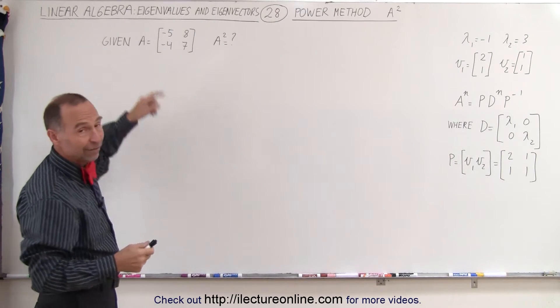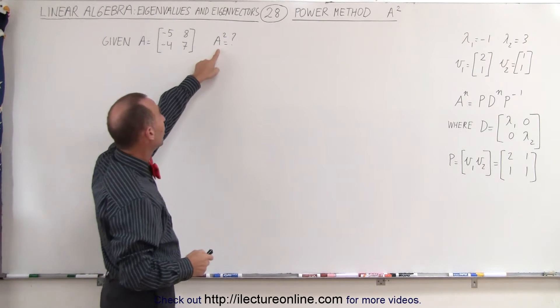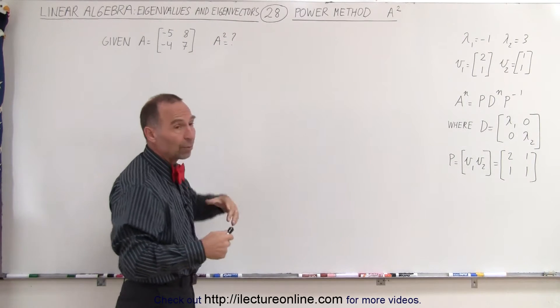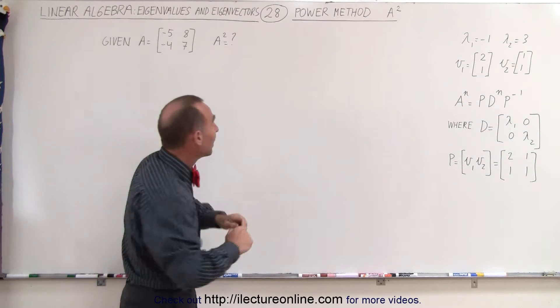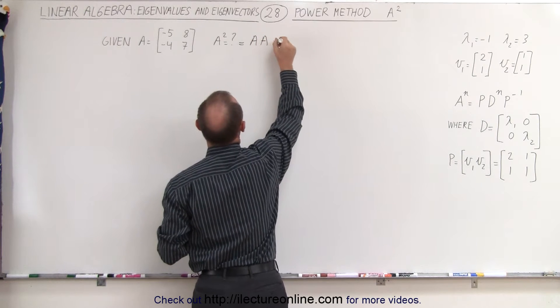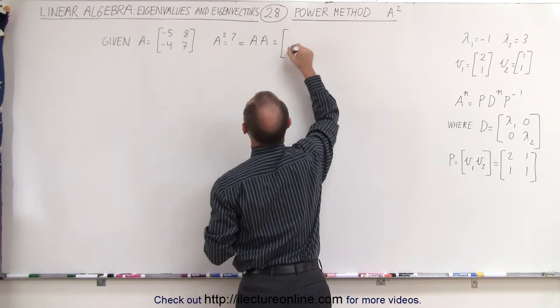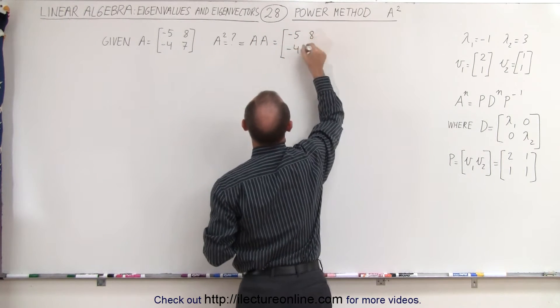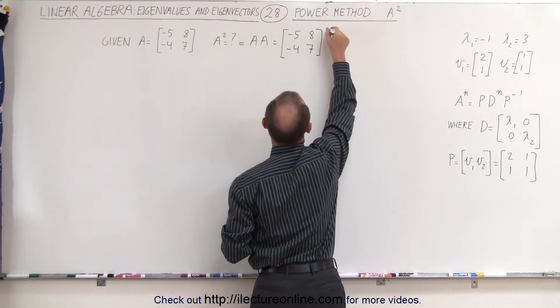So what we're going to do first is, given this matrix, let's go ahead and find the squared matrix the way we normally would do it, to simply multiply the matrix together by itself. We'd say that this is simply equal to A times A, and therefore this can be written as negative 5, negative 4, 7, 6, and then multiply it simply by itself.